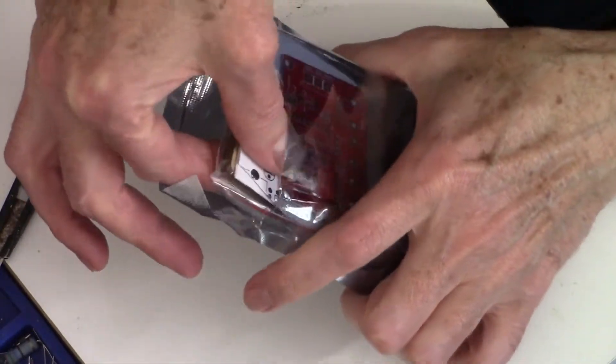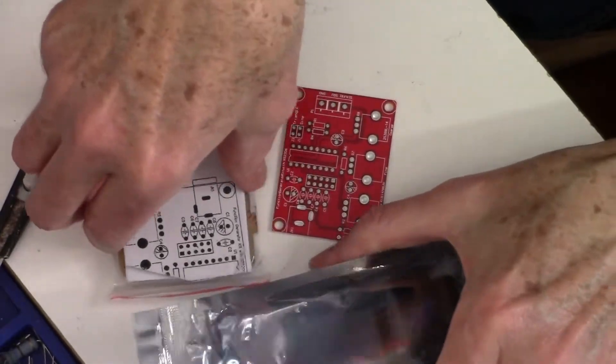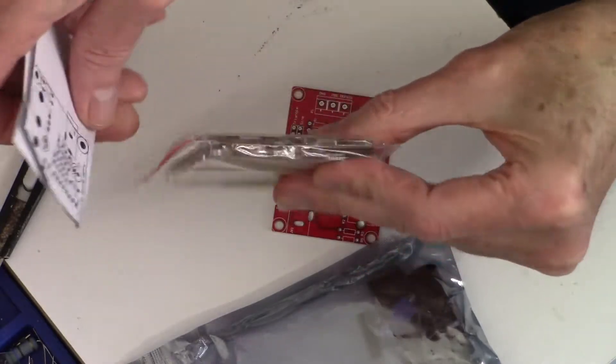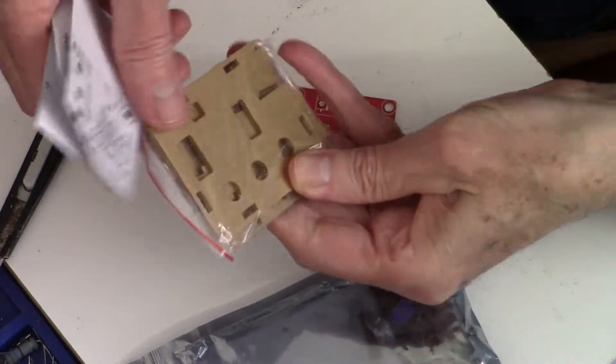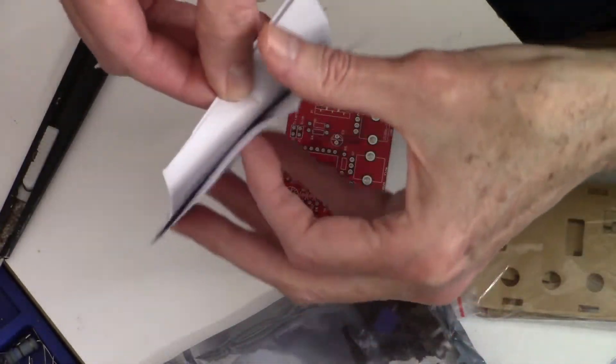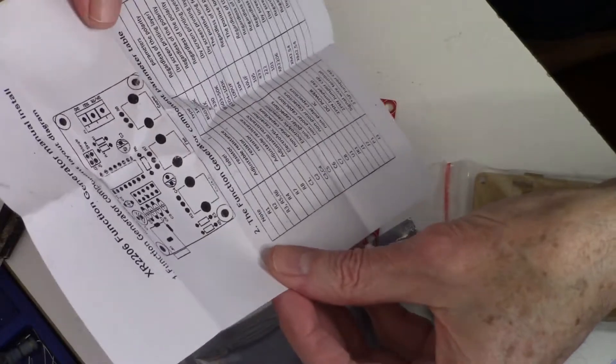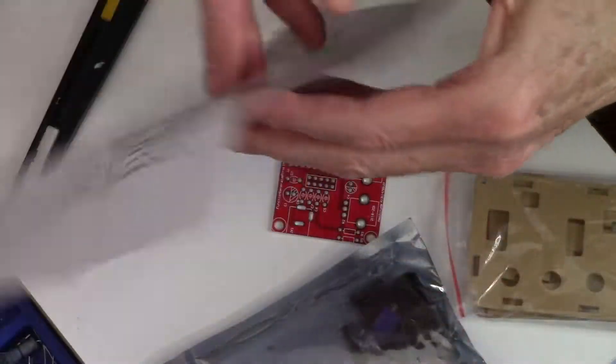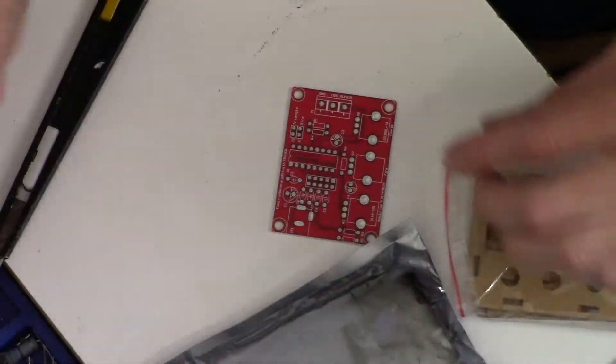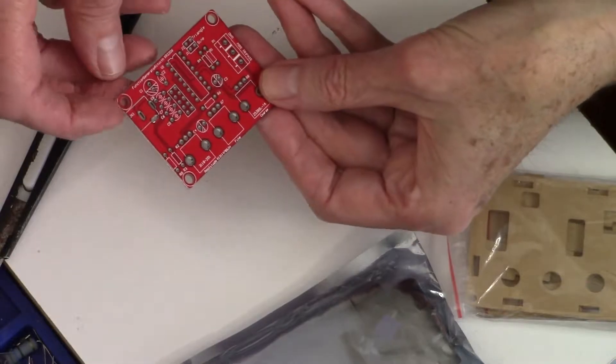We'll take it out of the package and see what we have. Looks like it comes with an enclosure. Nice. Some instructions. Excellent. Instructions are in English, that's always a plus. Very good. Nice looking printed circuit board.